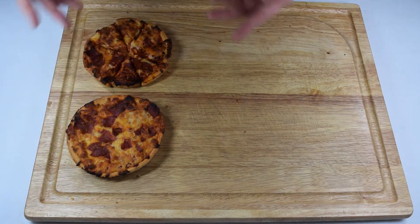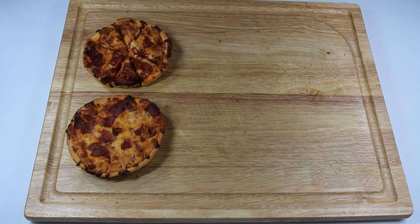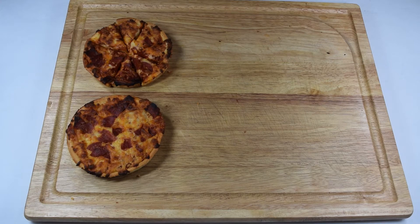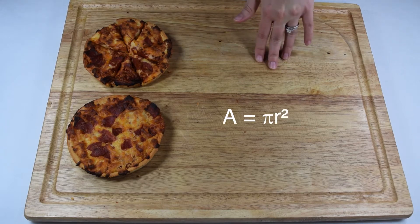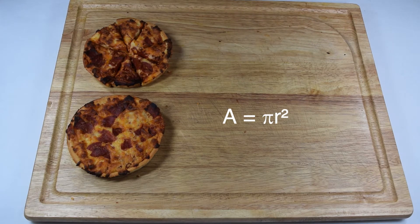However, circles aren't polygons and they don't have a base and height. So instead, we have to find the area of a circle by using the equation area is pi times radius squared. Today we're going to see where this formula comes from and practice using it.